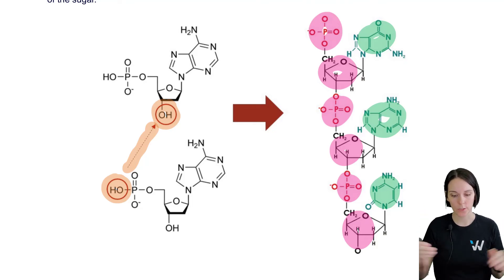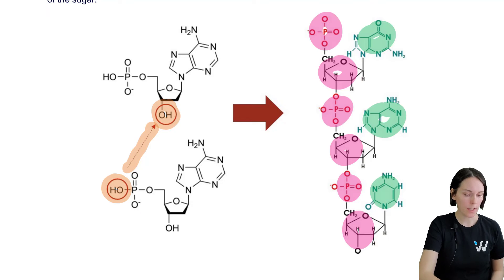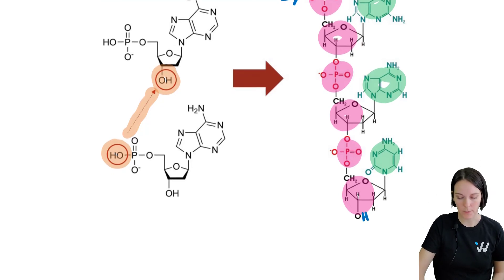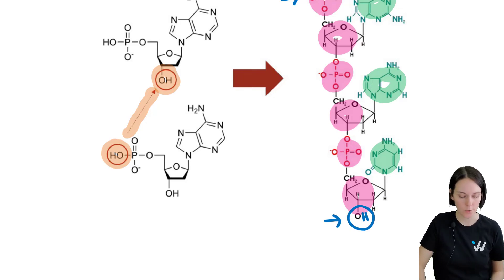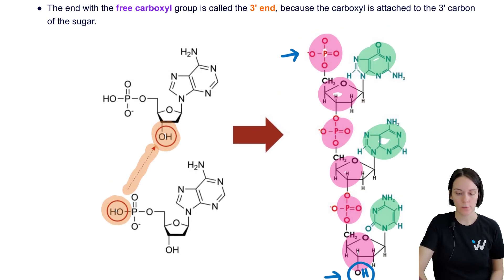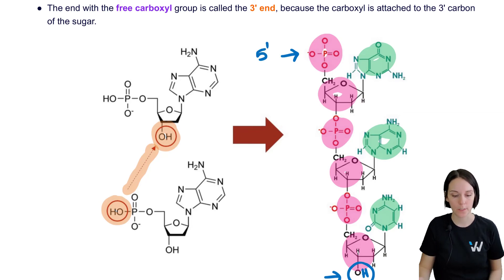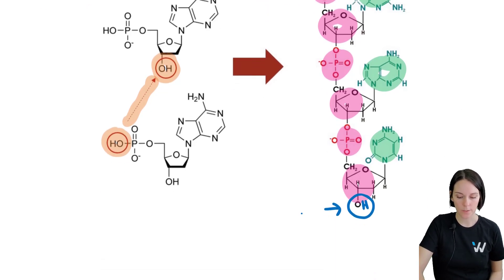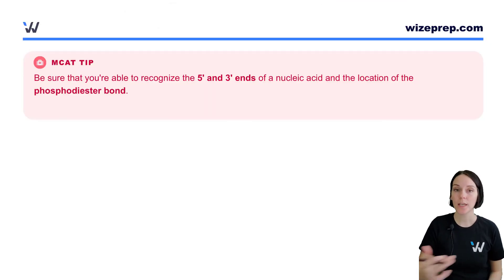In addition to the phosphate-sugar backbone, we also form two different ends of this long chain. On one end we have a phosphate group hanging off, and on the other end we have a hydroxyl group. The end with the phosphate group hanging off is called the five prime end — the five prime phosphate — and the end with the hydroxyl group is called the three prime end.